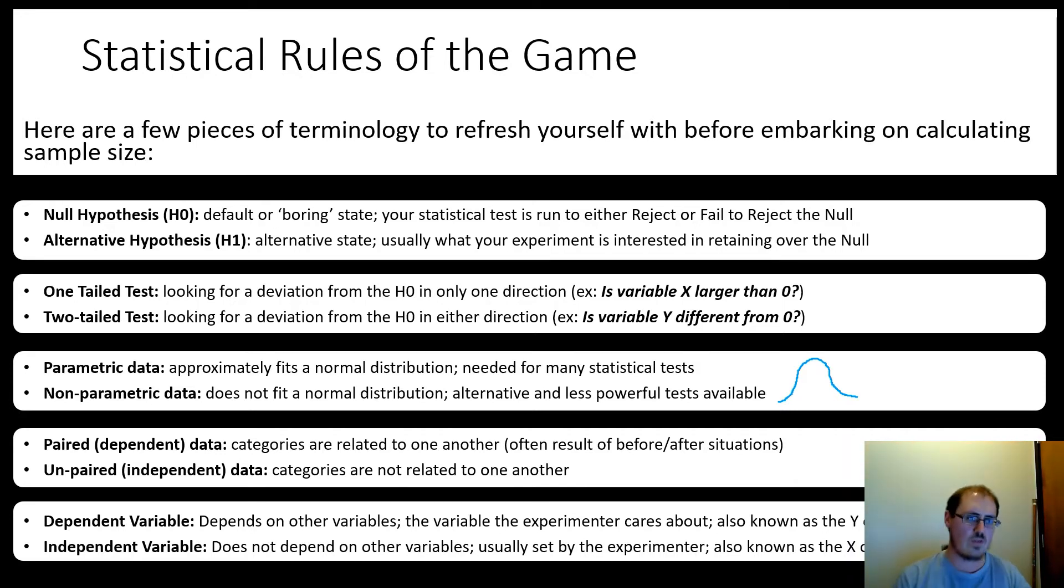The fourth set here is paired versus unpaired, also known sometimes as independent versus dependent data. So paired data, the categories are related to one another. These are often result as a before-after situation, like the idea of say a patient here, I'm going to call him red.